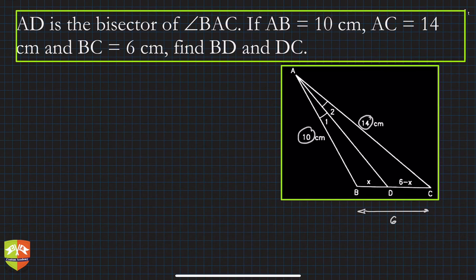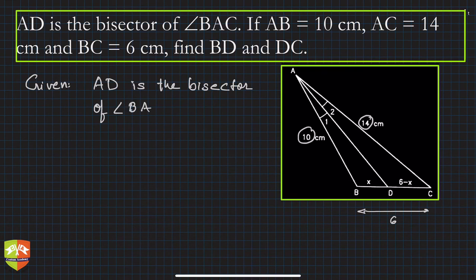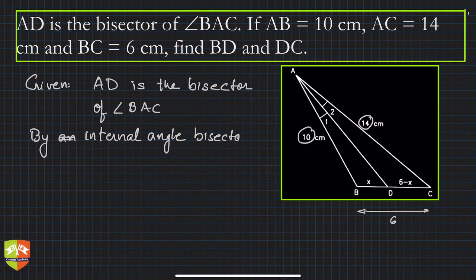Again, what's given? Given is AD is the bisector of angle BAC. And because of that what will happen? We know by internal angle bisector theorem.